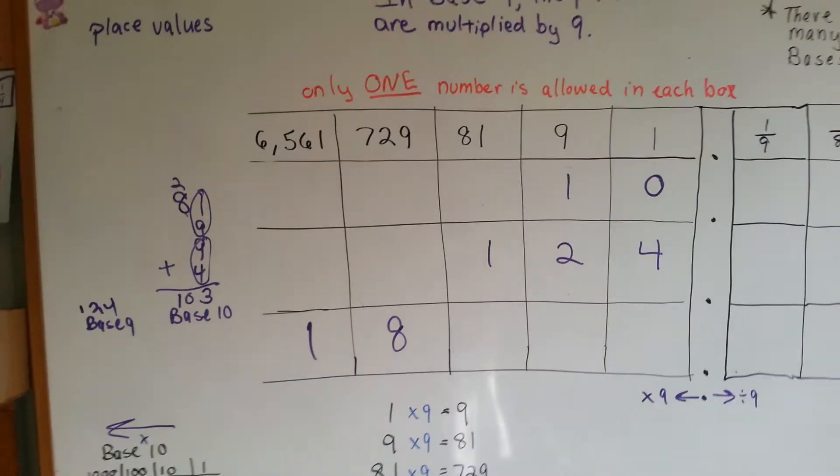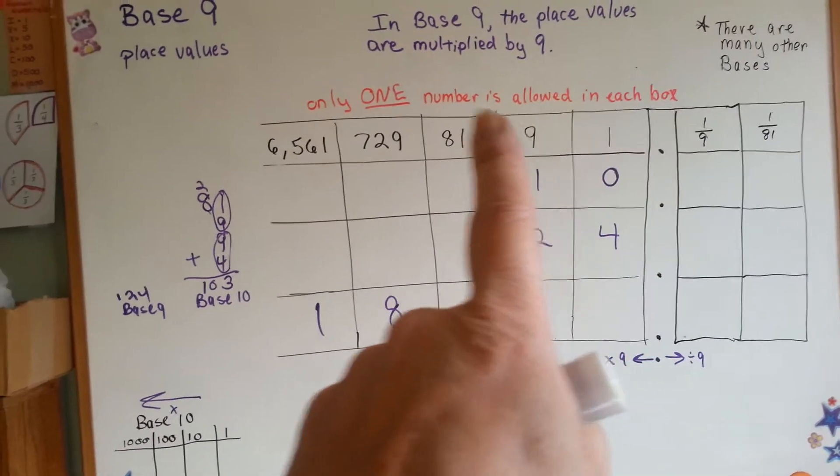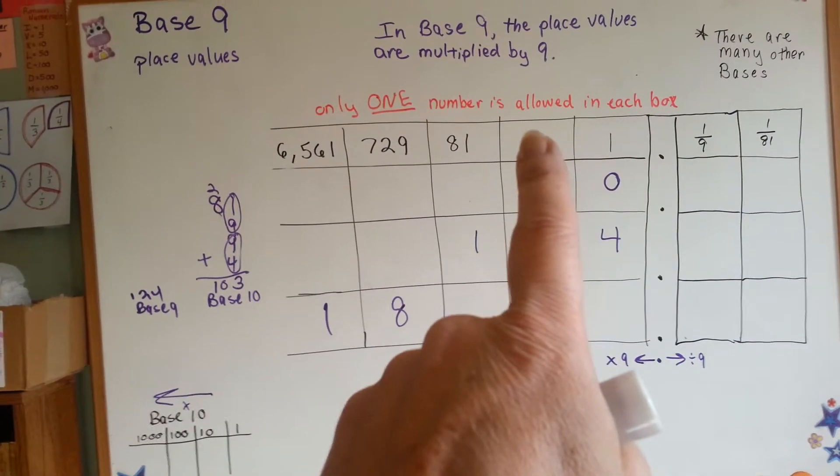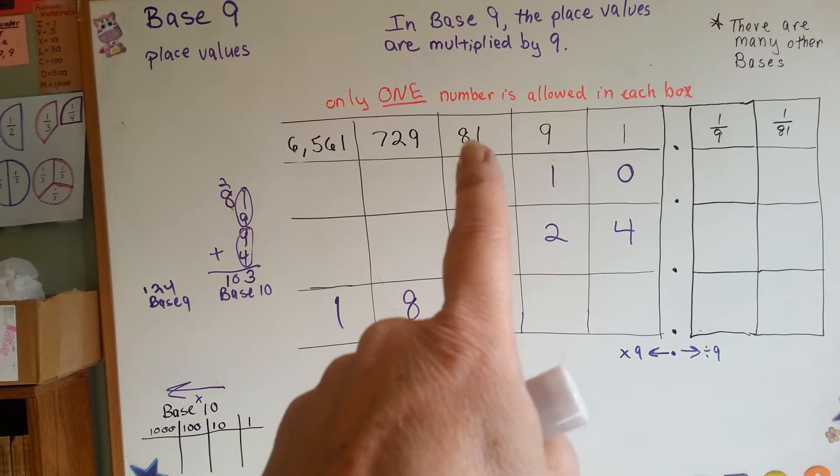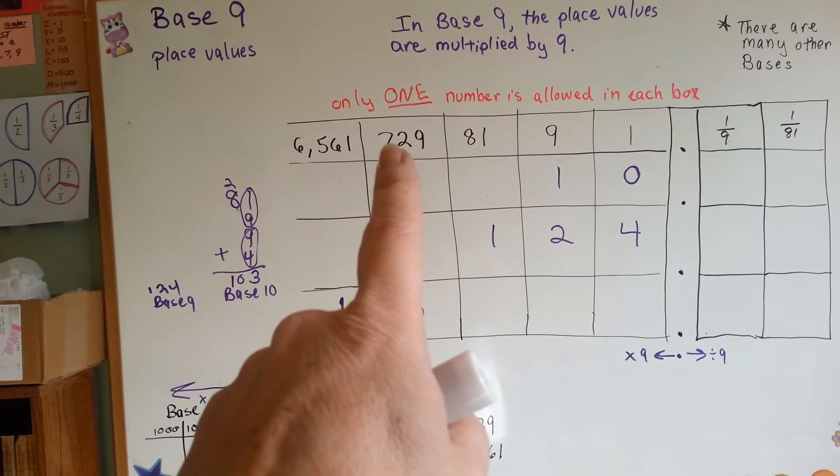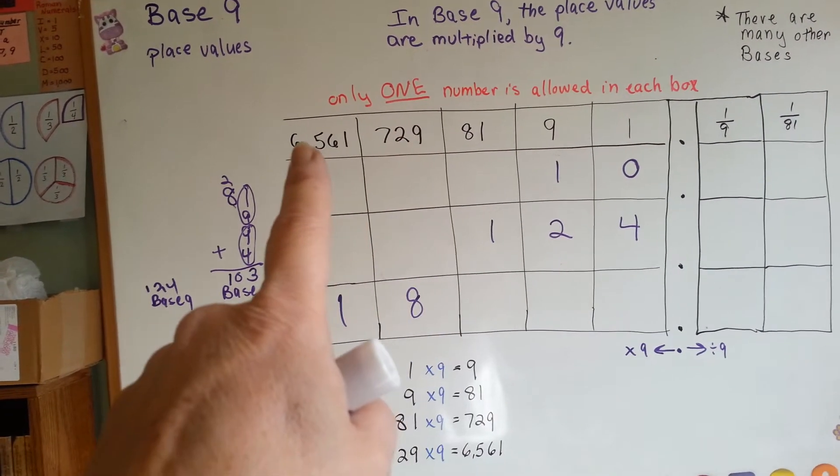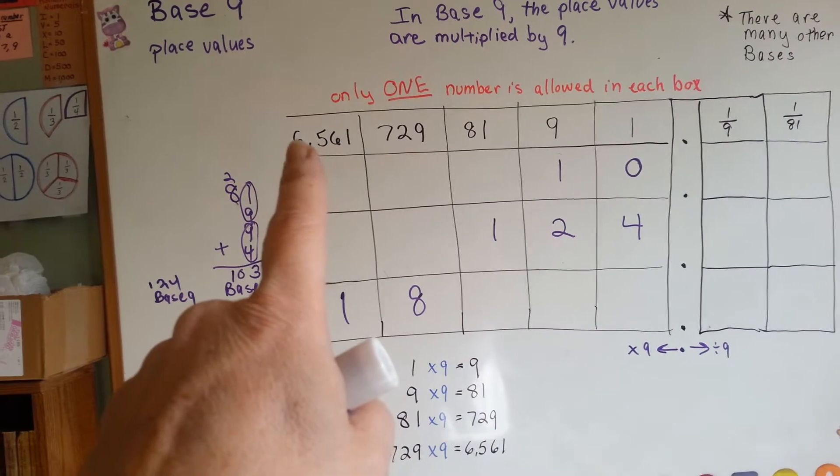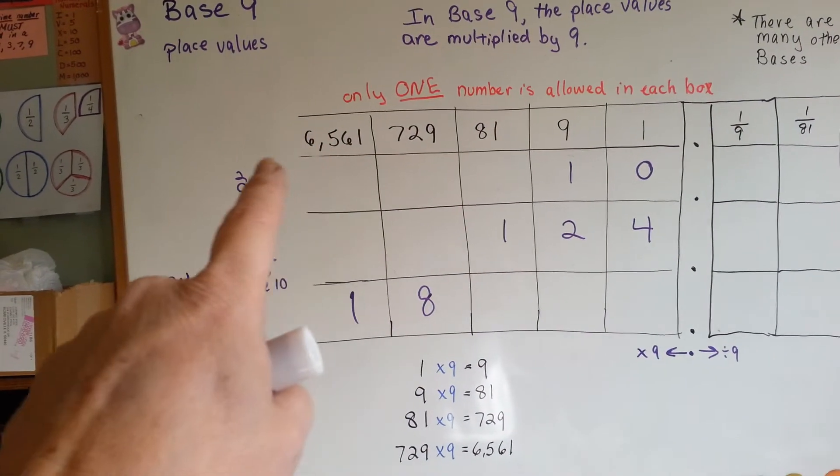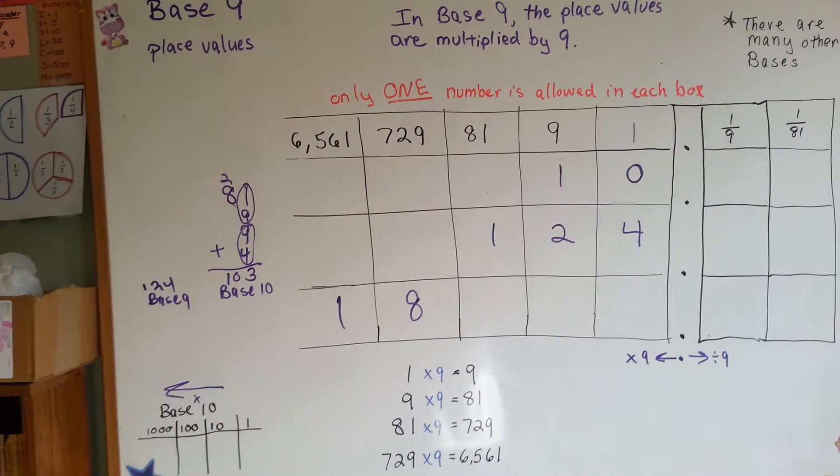So that's base 9. Just keep multiplying by 9. 1 times 9 is 9. 9 times 9 is 81. 81 times 9 is 729. 729 times 9 is 6,561. And then that times 9 would be the next place value.